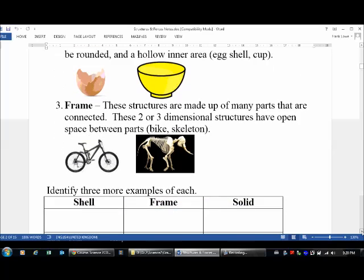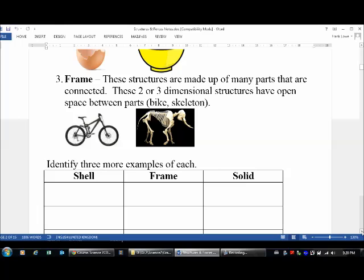The last category is a frame. Frame structures are made up of many parts, multiple parts, that are connected in some way. They have open spaces between those parts as well, and two really good examples are a bike and a skeleton. With a bike and a skeleton, you can see they're made up of several, multiple parts, but there's always space in between them. And in some cases, those structures have material that fills in those spaces. But with the case of a skeleton, if you just have the skeleton, that's a classic skeleton.